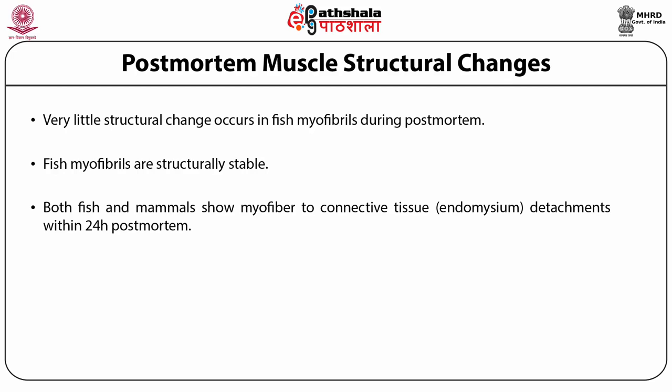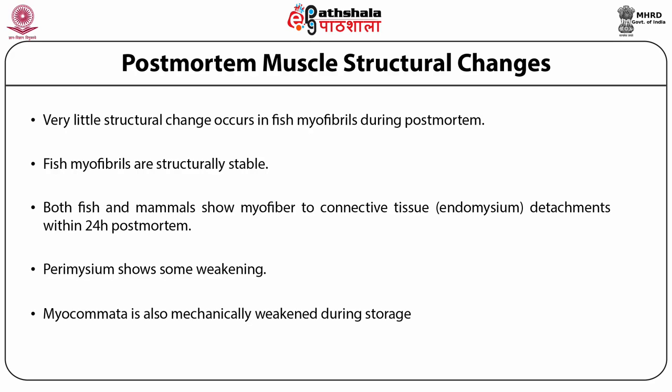The connective tissue of mammals and fish, especially the endomysium, is very stable during post-mortem but becomes detached from the myofibers. Endomysium detachment is due to cytoskeletal breaks, not to degradation of the connective tissue itself. Perimysium shows some weakening by scanning electron microscopy of muscle extracts but extensive breaks are rare. The myocommata is also mechanically weakened during storage and is very heat-labile. It is the fragility of the connective tissue which contributes to fillet gapping and long-term storage texture changes.